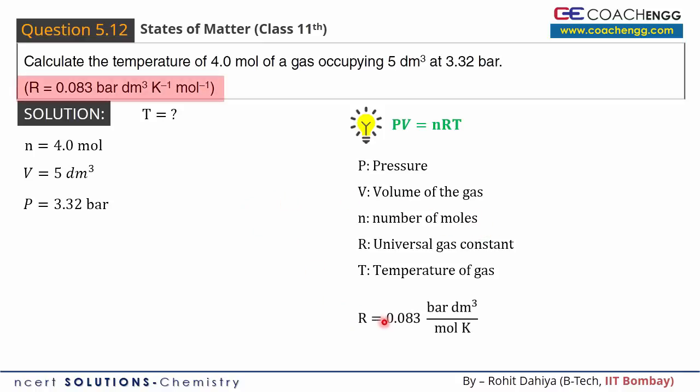The R value is written here. Always focus on R's units. If bar is in R's units, then pressure should be expressed in bar. Volume unit should be in decimetre cube. Quantity of the gas should be in moles and temperature should be in kelvin.